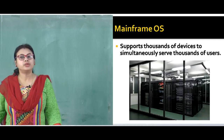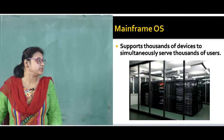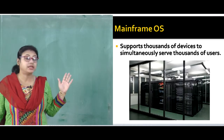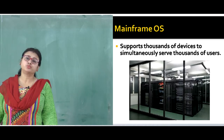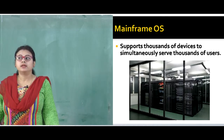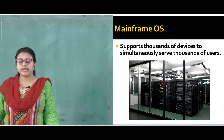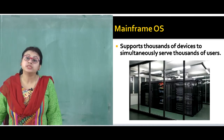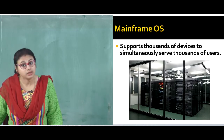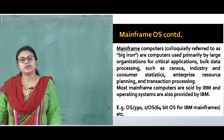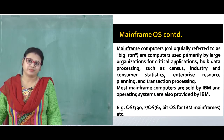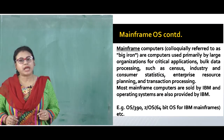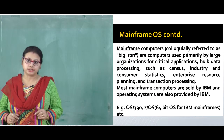Going to the first type — the mainframe operating system. Here I have shown a picture of a mainframe: one big computer occupying the size of a room. It supports thousands of devices to simultaneously serve thousands of users. A mainframe operating system is also colloquially referred to as 'big iron.'